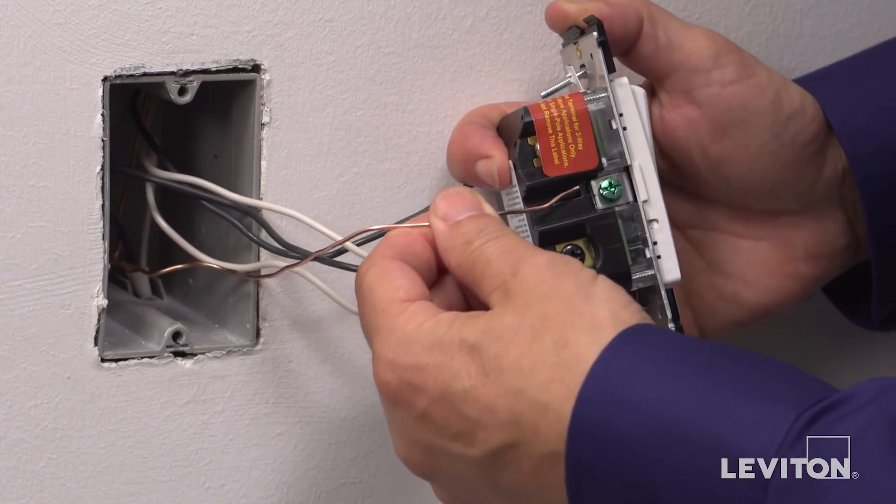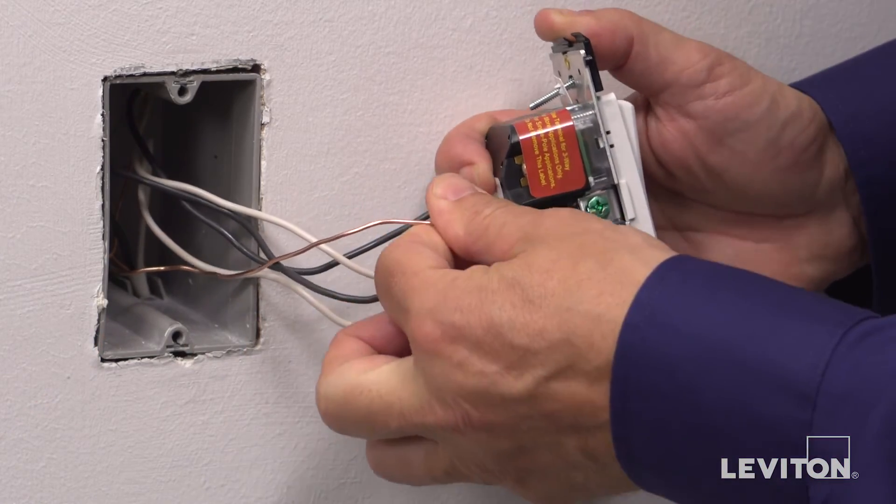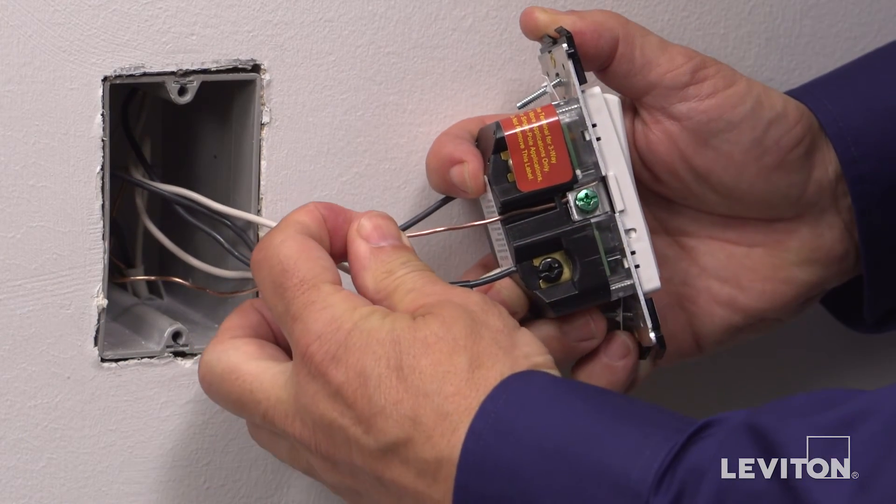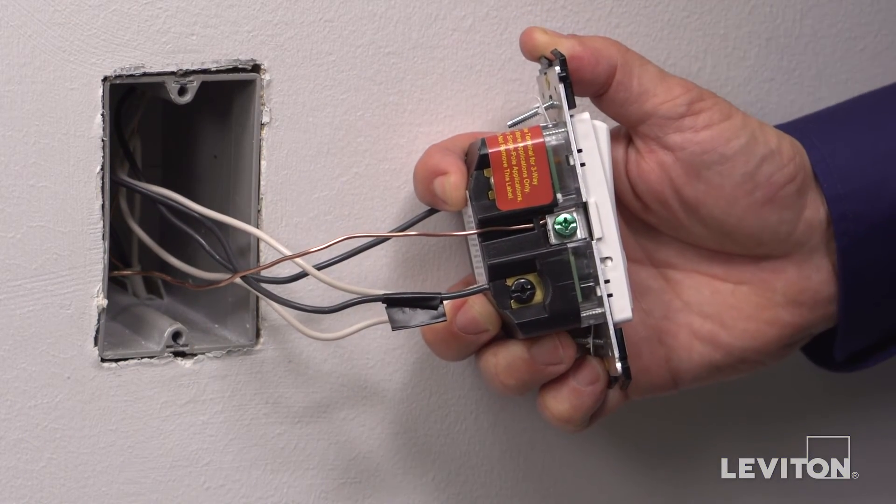Finally, take the ground wire and insert it under the clamp of the green terminal screw. Tighten the screw to secure.